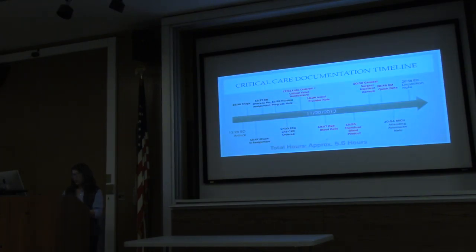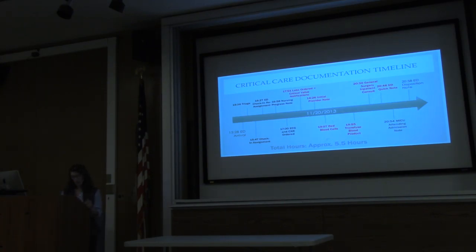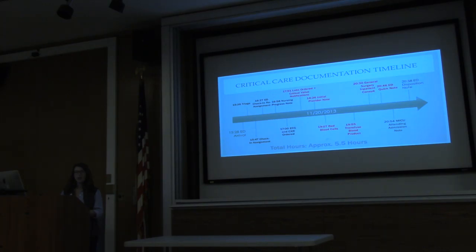On our timeline, you can see the patient was in the ED for about five and a half hours. The patient was upgraded towards the end of their care, and about 12 minutes later was dispositioned. Between 7 and 8:30, red blood cells were ordered and transfused, there was a consult with critical care, and the patient was upgraded to critical care.